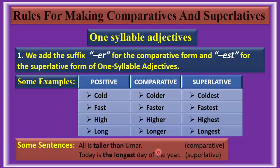For example, 'tall' is a one-syllable adjective. We add '-er' to get 'taller' and we use 'than' — Ali is taller than Omar. For the superlative, we add '-est': today is the longest day of the year. In the superlative degree we add '-est' and we must use the article 'the'.